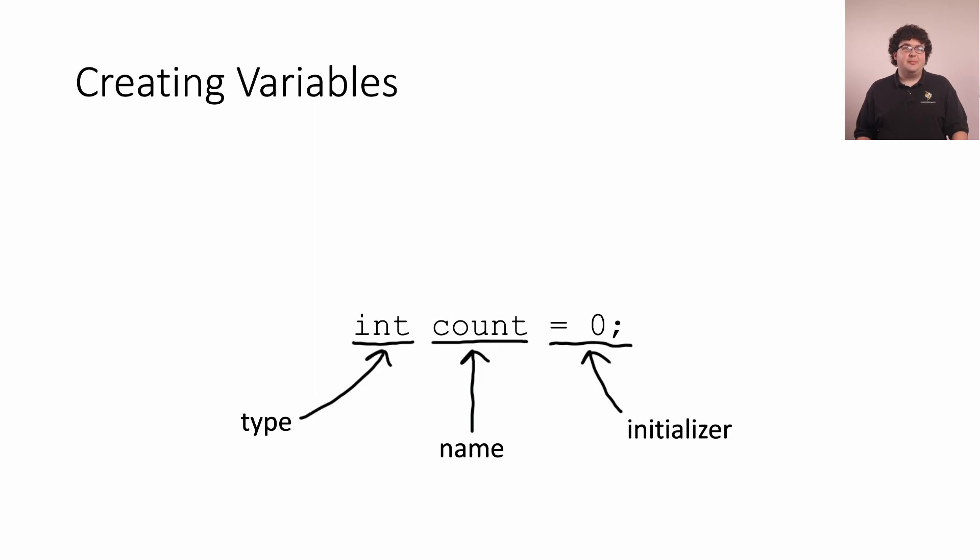The first part is our variable's type. This can be any of the primitive types we've discussed so far, or a class type for objects, which we'll talk about later. The next part is our variable's name. This can be any combination of letters, numbers, and underscores, as long as it doesn't start with a number.